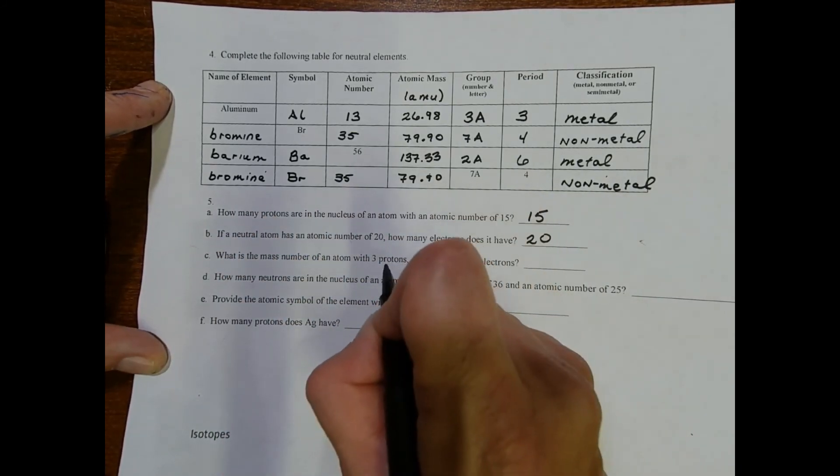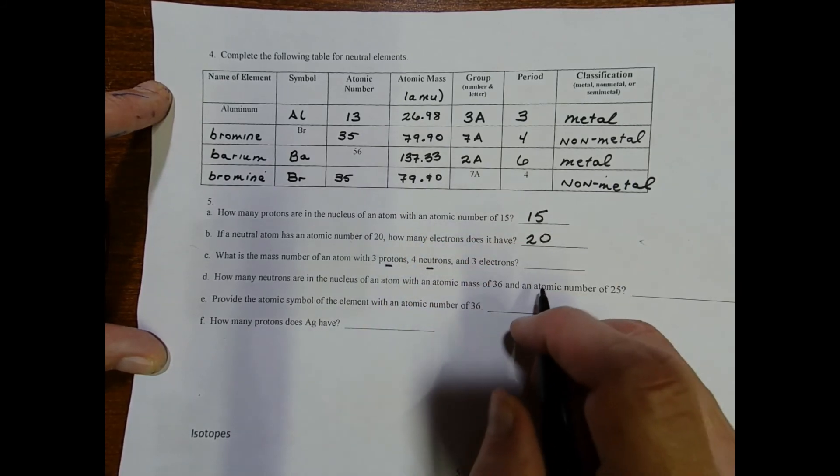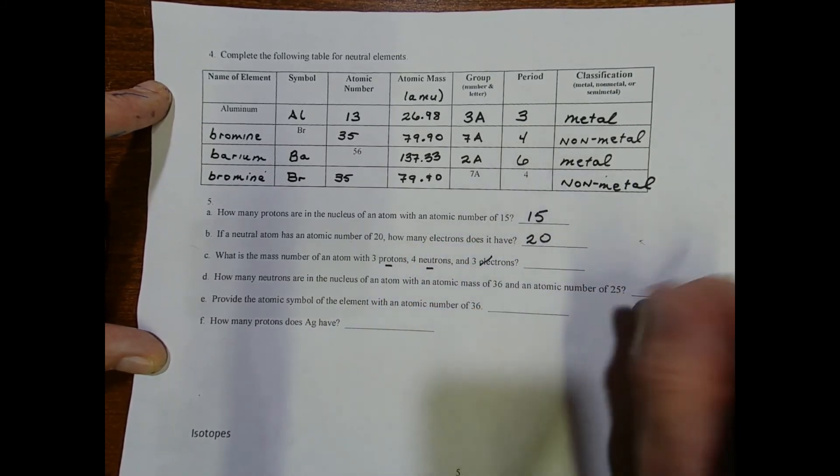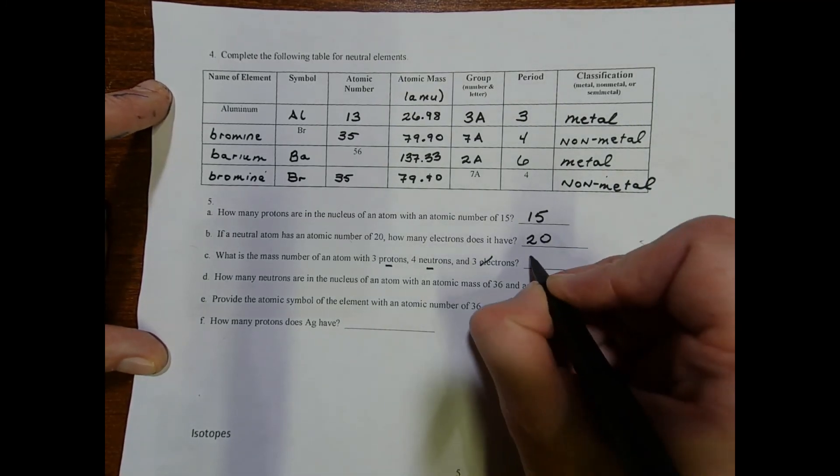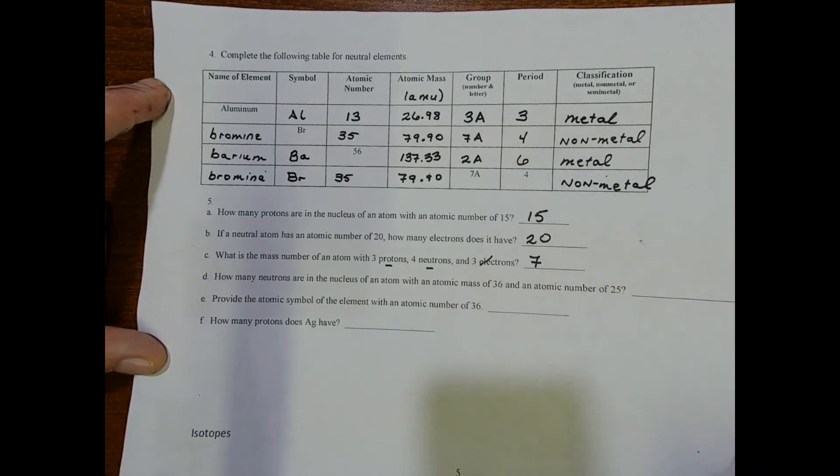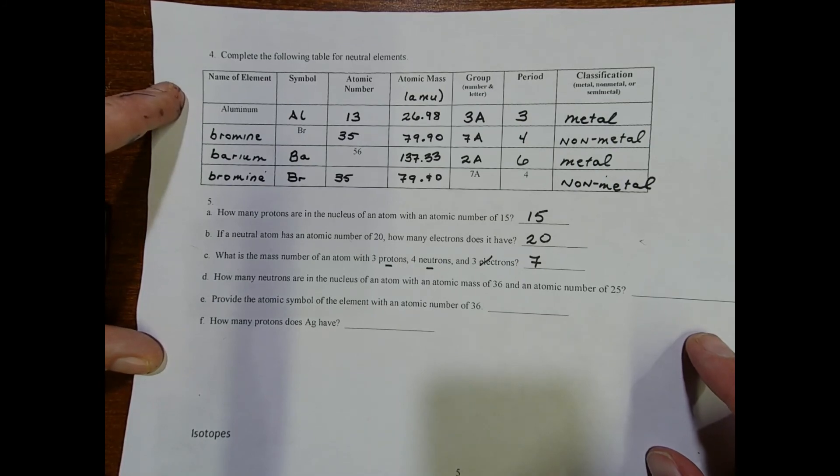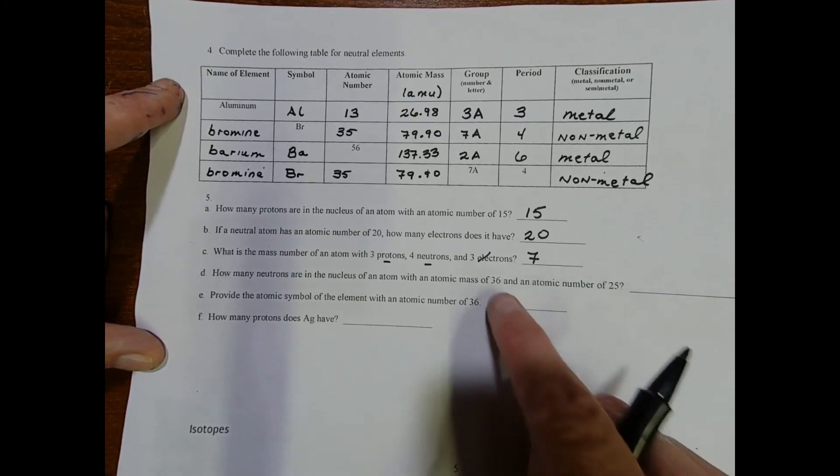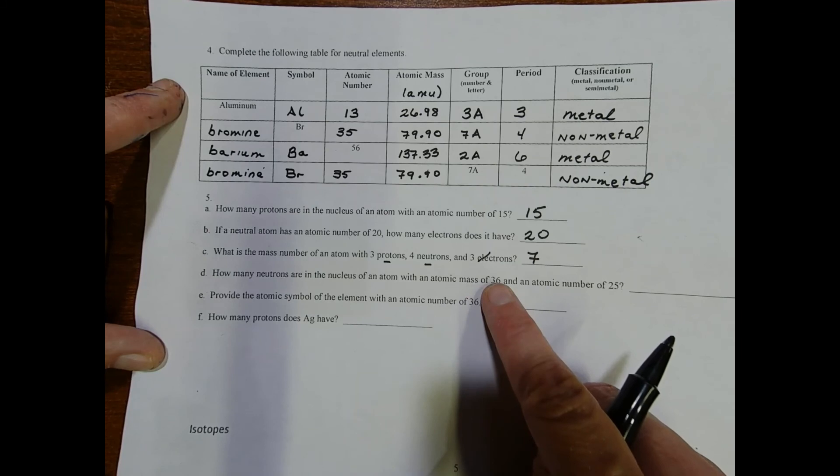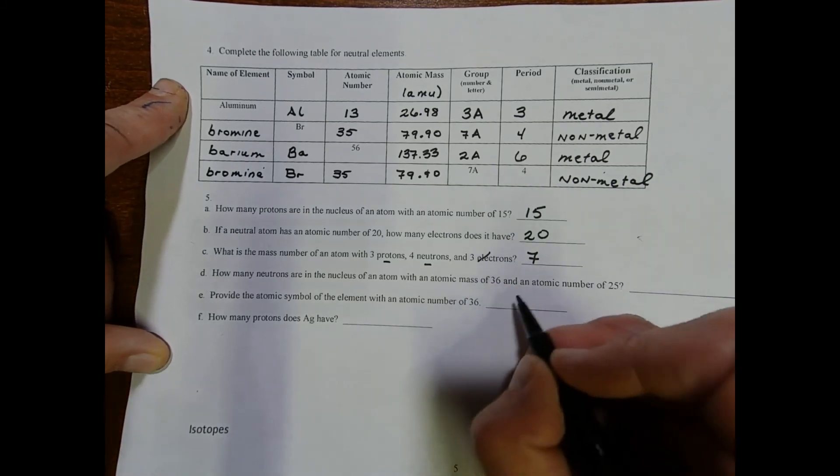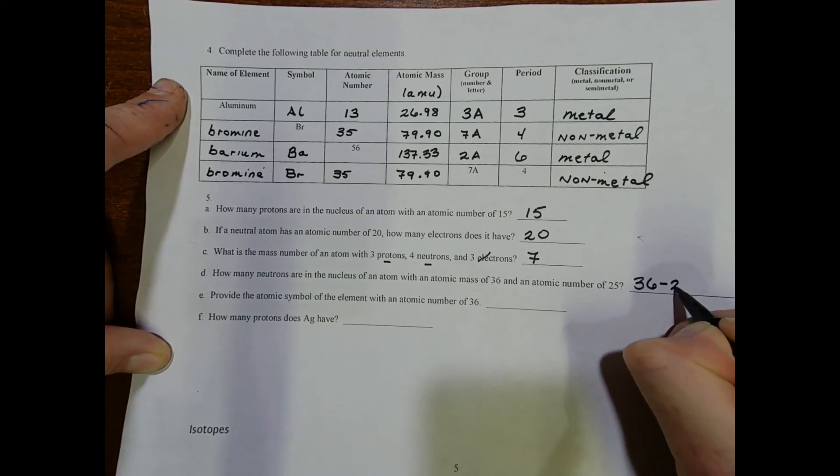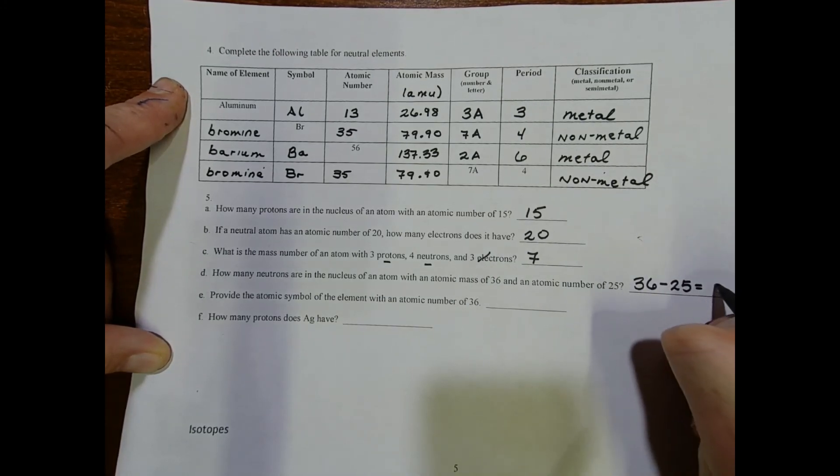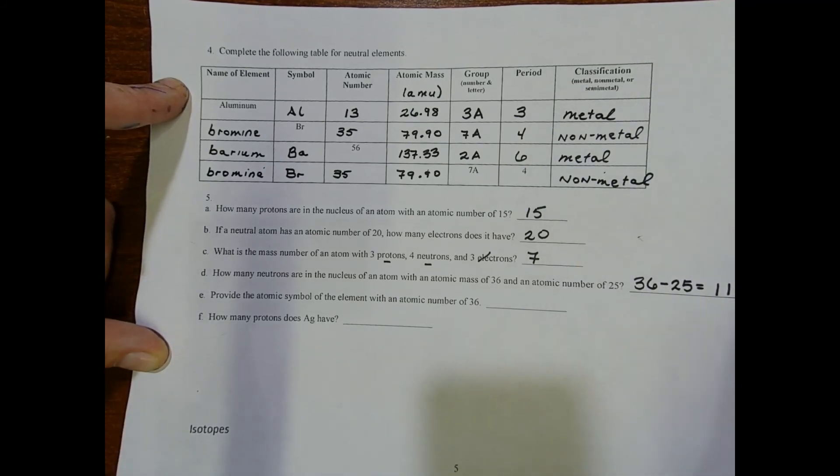Here we're asked to calculate a mass number. This is a cool problem. Protons contribute to mass and neutrons contribute to mass—we're not going to count the electrons because they're very lightweight and they're in the electron cloud. So we're going to go with seven as the mass number: three plus four. How many neutrons are in the nucleus of an atom with an atomic mass of 36 and an atomic number of 25? We need to take the difference between these numbers to calculate the number of neutrons, so here we're going to go with 11.